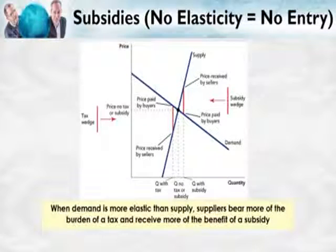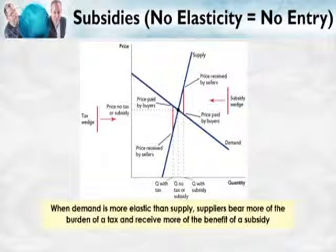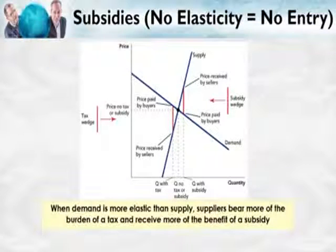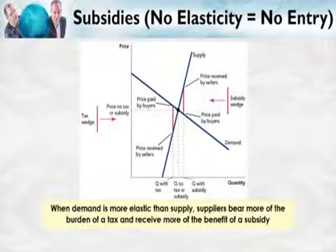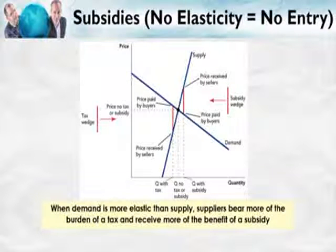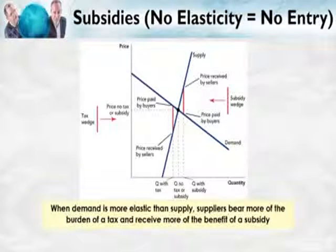Do you remember our intuition for who bears the burden of a tax? Elasticity is like escape — the more elastic the curve, the more you can escape. Here's a similar intuition for subsidies: when you have an inelastic curve, there's no entry. No elasticity equals no entry, and when there's no entry, that's when you gain the benefits of a subsidy. When no one can come in to take the subsidy, you get the benefit.